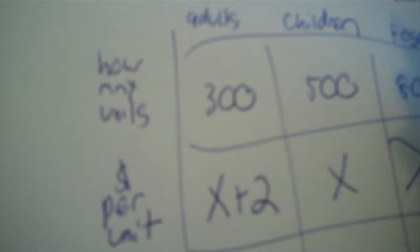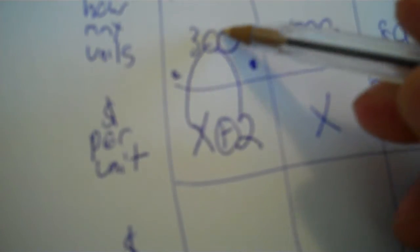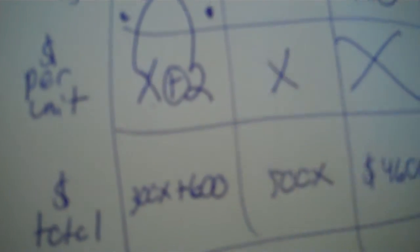Distribute. Since you've got a plus sign here, you need to do your rainbows. So I take 300 times X. That's 300X plus, and then you take 300 times 2, 600. Then 500 times X is just 500X. No equation there. This is the only equation you've got. Write it out and solve it.